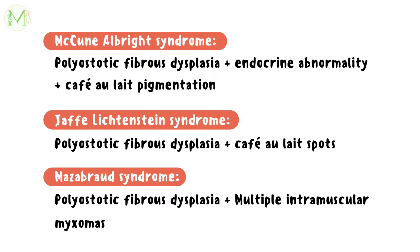If a triad of polyostotic fibrous dysplasia, endocrine abnormalities, and café-au-lait pigmentation is present, it is termed McCune-Albright syndrome. When polyostotic fibrous dysplasia is associated only with café-au-lait pigmentation, it is termed Jaffe-Lichtenstein syndrome. Rarely, a patient may also have multiple intramuscular myxomas along with polyostotic fibrous dysplasia; it is termed Mazabraud syndrome.